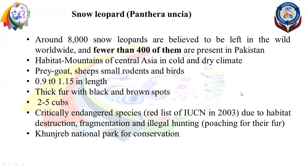Snow Leopard is not the national mammal but is called the national predator of Pakistan. This is new information: Snow Leopard is found in Central Asia — its common home is in Central Asia, including Pakistan and India. Worldwide, about 8,000 snow leopards are believed to be left in the wild, and in Pakistan fewer than 400 remain. Its habitat is the cold and dry mountainous areas of Central Asia.